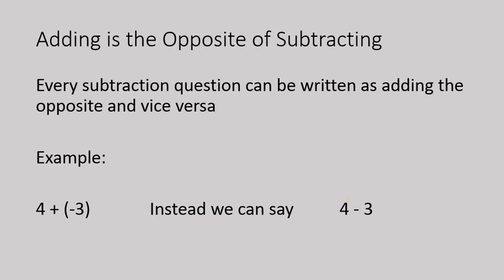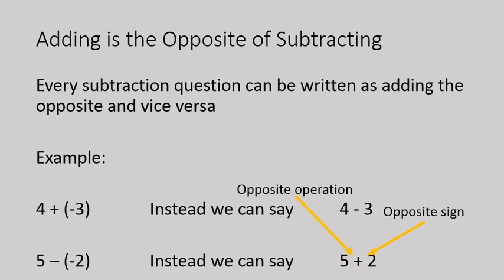Let's look at another example: five minus negative two. Instead, we can say five plus two. We have the opposite operation — we're adding instead of subtracting — and the opposite sign: it's positive two instead of negative two.